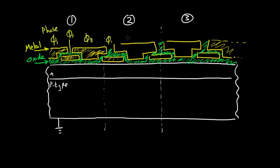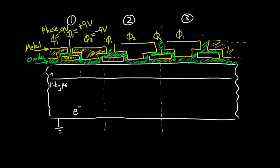Let's make phase two equal to plus nine volts, phase three equal to minus nine volts, and phase one equal to minus nine volts. Now, if you're an electron sitting in the silicon and you get created in this pixel, you're going to go to the highest potential in the system — the plus nine volts. So you swim up and find yourself right there under phase two.